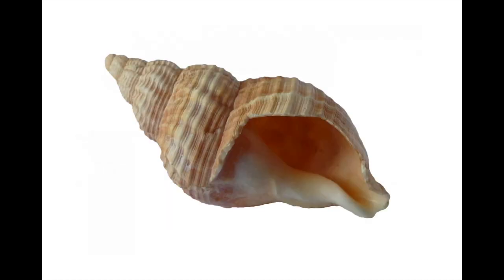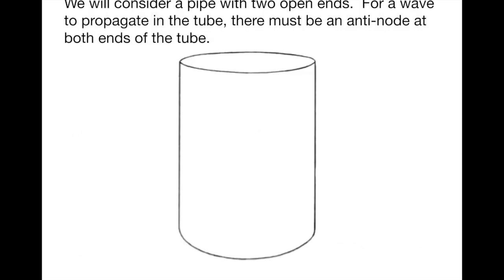The main idea here is the idea when you hold a seashell to an ear, you can hear the ocean. That's not actually what you're hearing. What you're hearing is resonant modes of sound waves inside the seashell. And we're going to study a much simpler structure here. We're going to consider a pipe with two open ends.